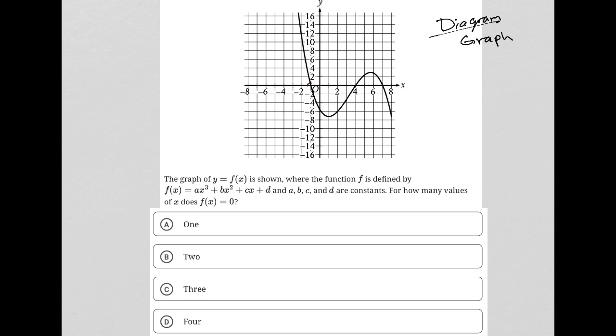I see an x-intercept at negative 1, a y-intercept that looks like it's probably at negative 6, maybe a little bit above, and x-intercepts at 4 and 7. The question says the graph of y equals